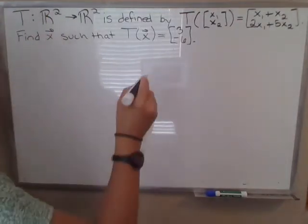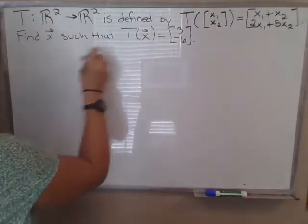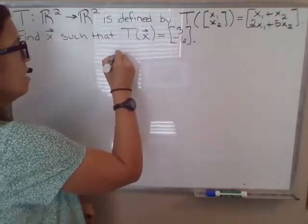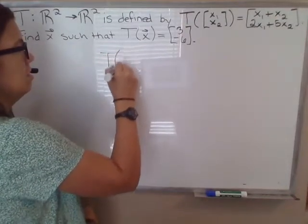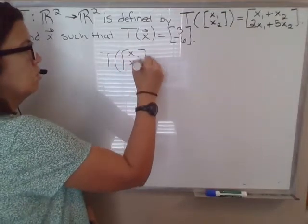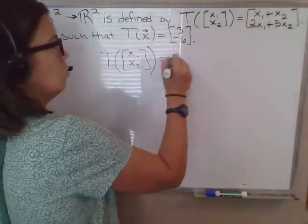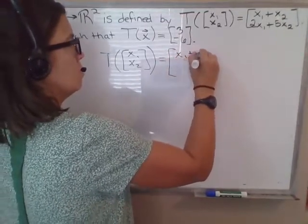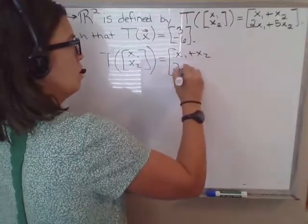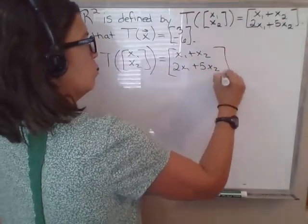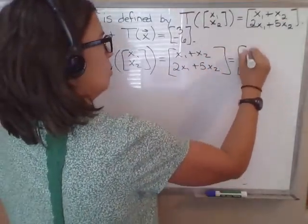So to do that, we could set up an equation. So if T of x equals 3, negative 6, that means that T of our unknown vector, I'll put x1, x2, which is defined by this equation at the top here, x1 plus x2, 2x1 plus 5x2, is equal to 3, negative 6.